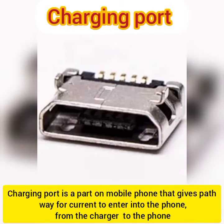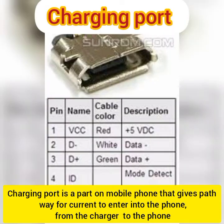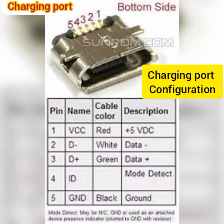The first part we are going to be talking about is the charging port. The charging port is the part on the mobile phone that gives pathway for current to enter into the phone from the charger. The required voltage to enter into the mobile phone is 5 volts. The charging port configuration has five pins — the first and last pins are for charging.